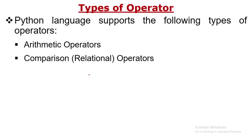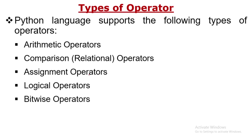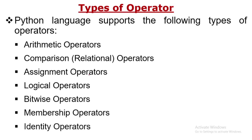The next one is the comparison operator, also known as the relational operator. In this kind of operator we are just checking comparisons of two values — whether the values are greater than, less than, equal to, or not equal to. Assignment operators are simple: the right-hand side value is shifted to the left-hand side. Logical operators perform AND, OR, and NOT operations. Bitwise operators work on single bits. Membership and identity operators are also available.